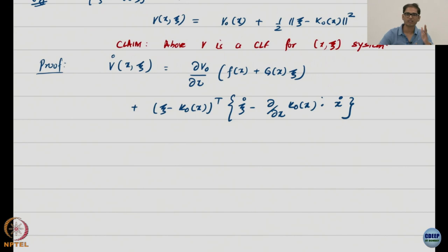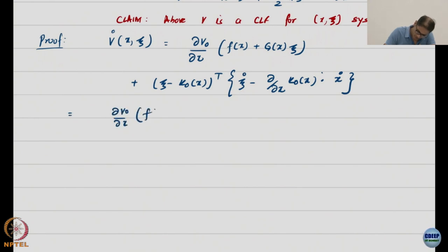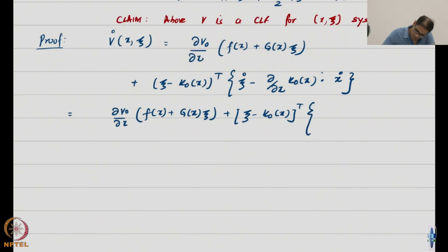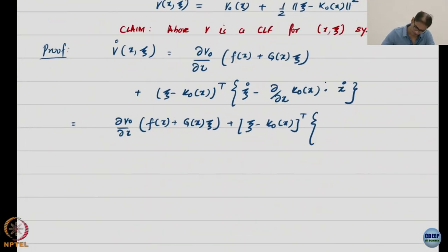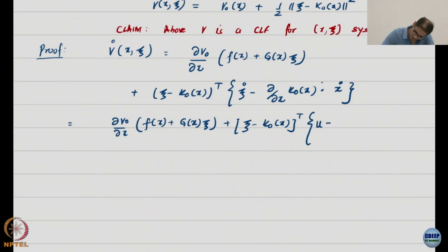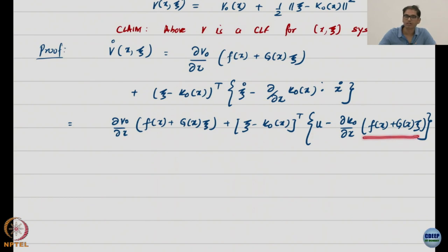Just like taking differentials, this is how V̇ is defined. Carefully expanding, I write: V̇ = ∂V₀/∂x · (f(x) + G(x)ξ) + (ξ − K₀(x))ᵀ · [ξ̇ − (∂K₀/∂x)(f(x) + G(x)ξ)]. And since ξ̇ = U, this becomes ∂V₀/∂x · (f(x) + G(x)ξ) + (ξ − K₀(x))ᵀ · [U − (∂K₀/∂x)(f(x) + G(x)ξ)].